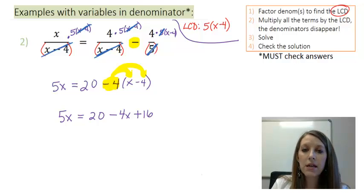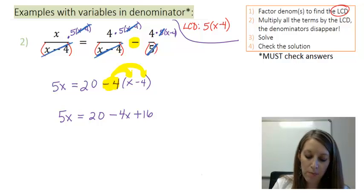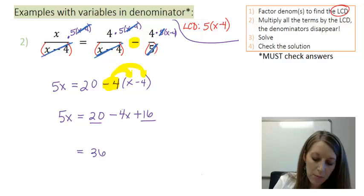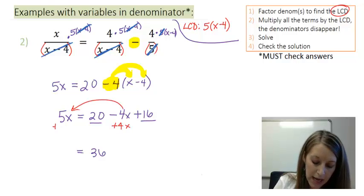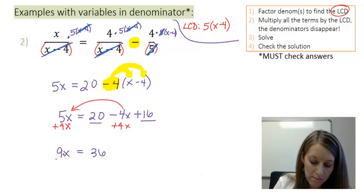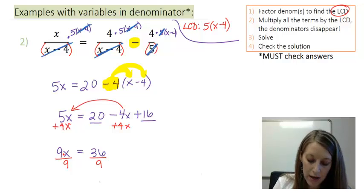Now I'm down to just a basic degree-1 linear equation. I combine my terms on the right: 20 plus 16 gives me 36. I move the 4x to the left by adding 4x to both sides, giving me 9x equals 36. To get rid of the 9, I divide both sides, and my final answer is x equals 4.